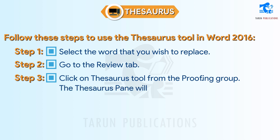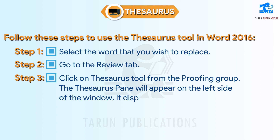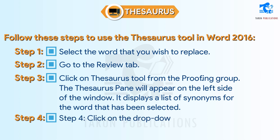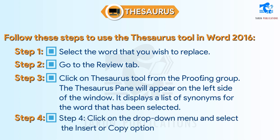The thesaurus pane will appear on the left side of the window. It displays a list of synonyms for the word that has been selected. Step 4: Click on the drop-down menu and select the Insert or Copy option.